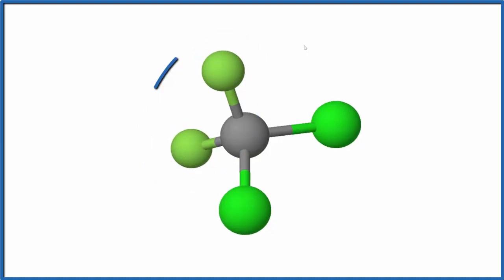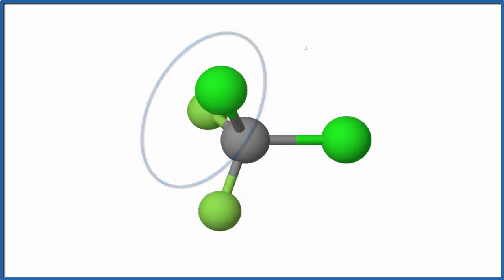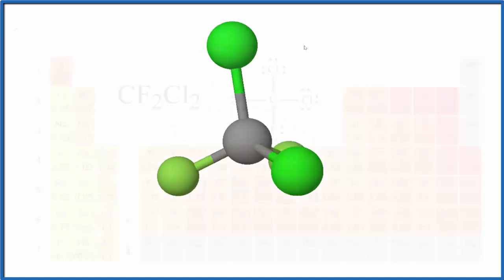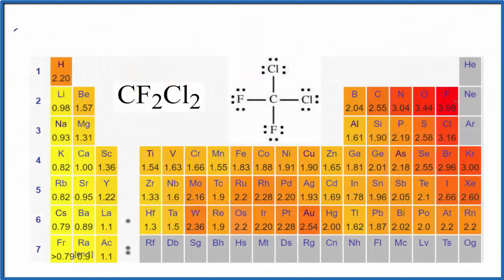Let's go back to our Lewis structure. To recap, we have this difference in electronegativity between our fluorines and our chlorines, and the fluorines are on one side. That means this is a polar molecule.